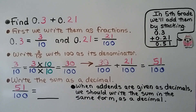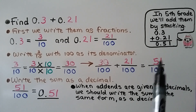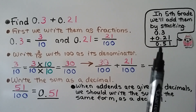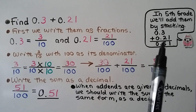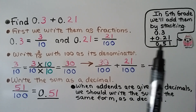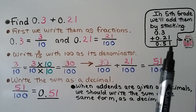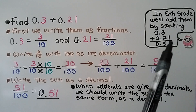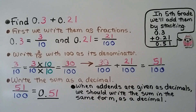We write a 0 in the ones place and a decimal point, and we write 51 for the hundredths. Now when we get into 5th grade, we're going to actually add decimals by stacking them and lining their decimal points up, so all the ones are in the same column, all the tenths are in the same column, and the hundredths are in the same column. Then we just add them like normal numbers and can even regroup them. We'll see how to do that in 5th grade.